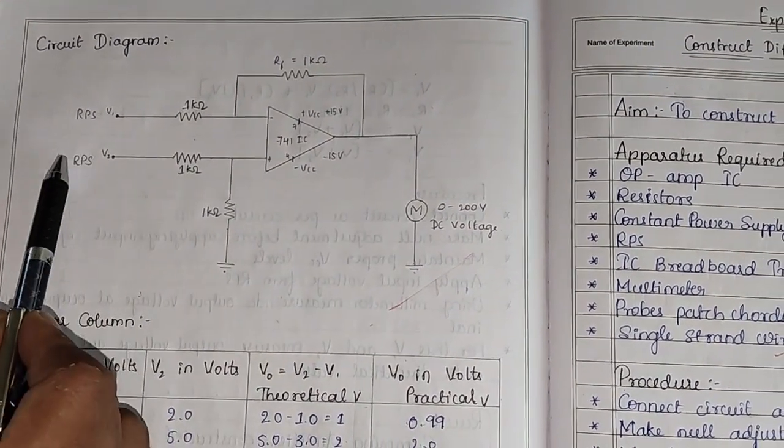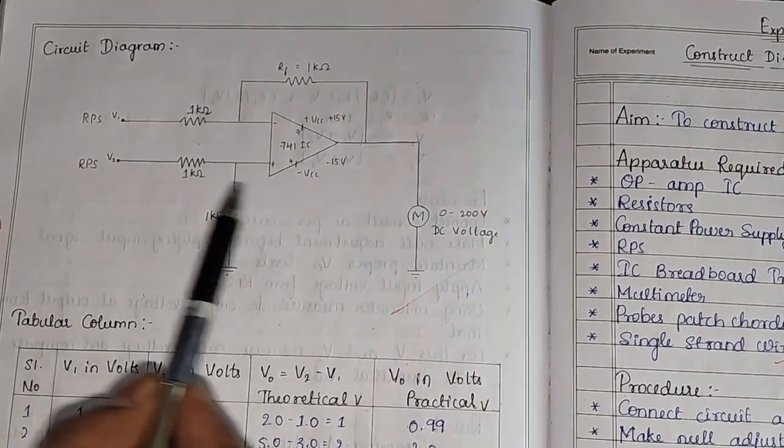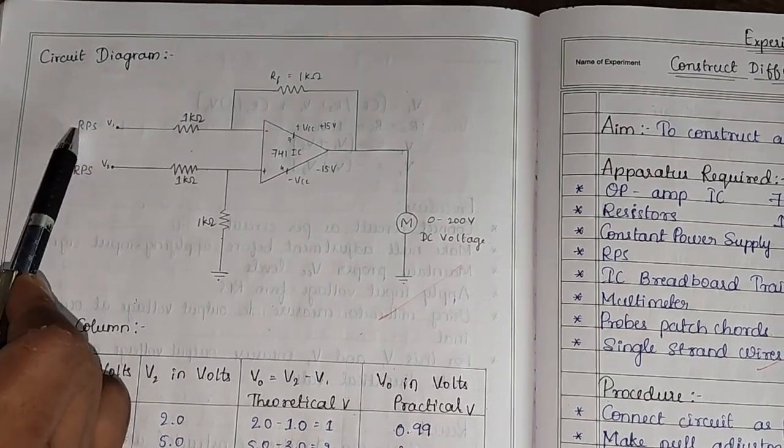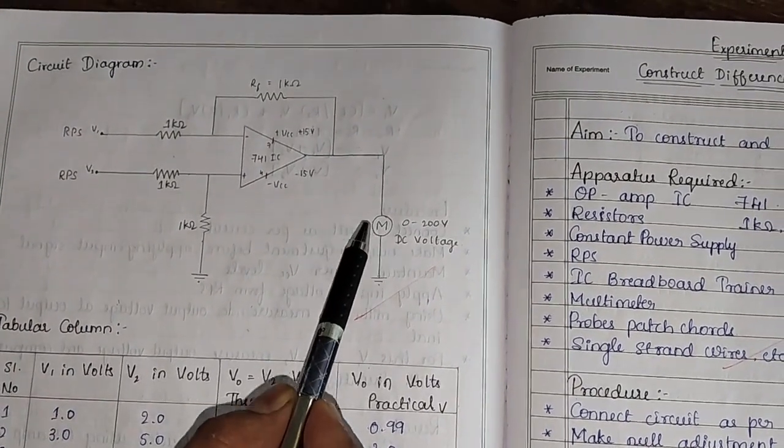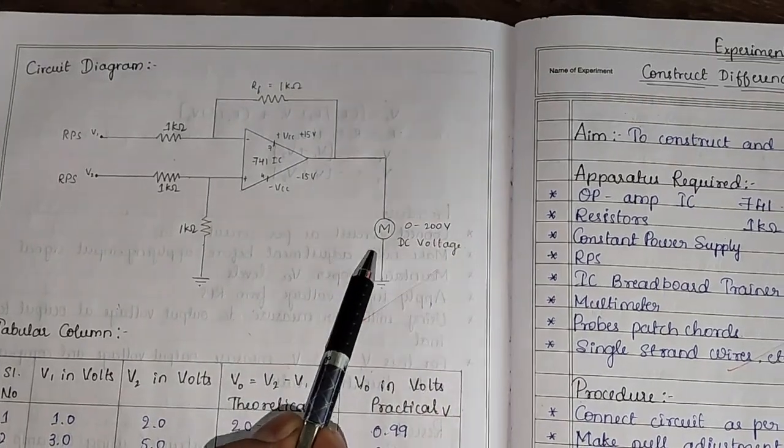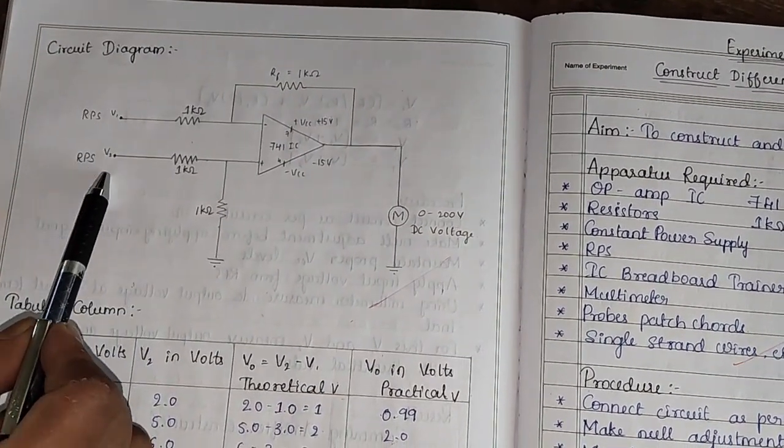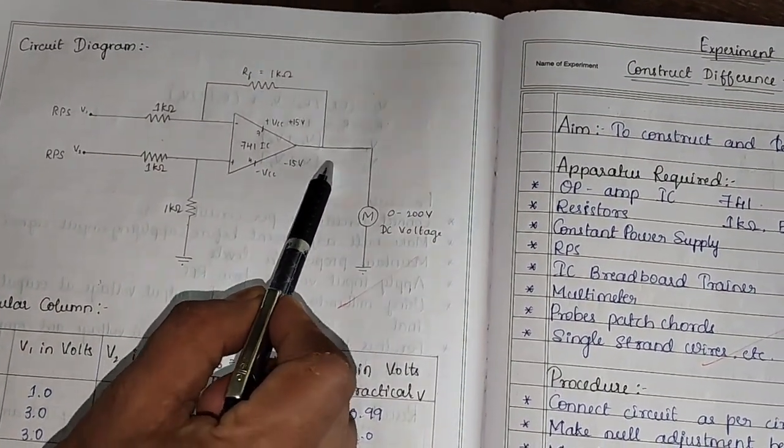What type of input we give at the input and what type of output we observe at the output. Here at V1 and V2, we apply DC voltage using regulated power supply and we measure the DC output voltage with the help of multimeter. V1 is a DC voltage, V2 also DC voltage, at pin number 6 we obtain DC voltage.